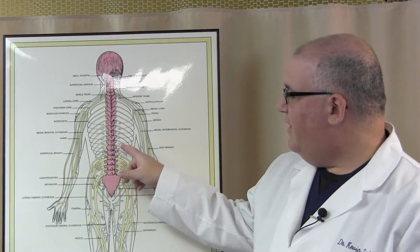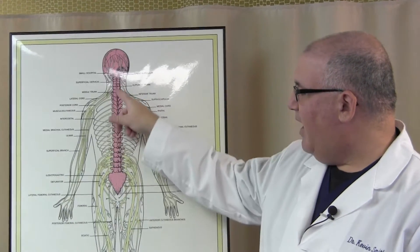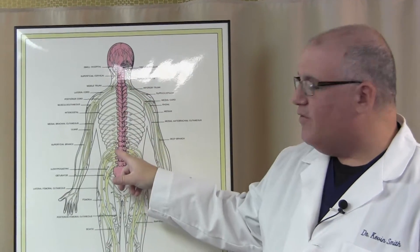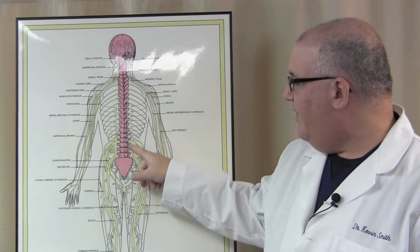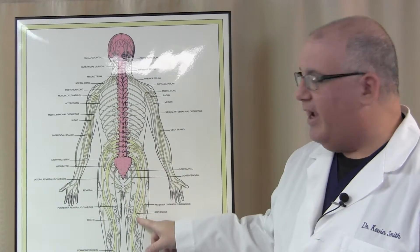One of the things we do in my office is check the neuro kinetic chain. The neuro kinetic chain is the chain of neurology that starts in your spine and then goes down your leg. If you take a look at this chart right here, this is the spine and the nerves that come out of the spine here in the lumbar area go down the leg.